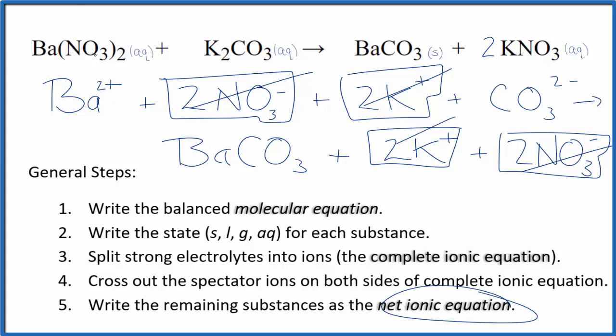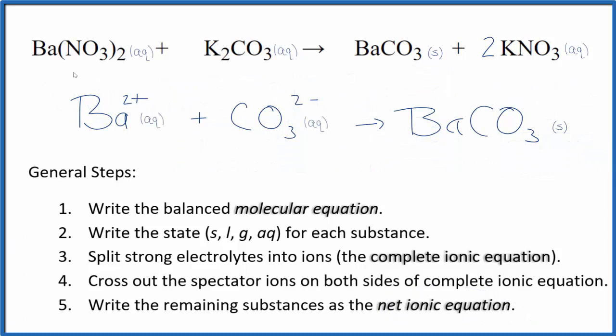What's left, that's the net ionic equation for Ba(NO3)2 plus K2CO3. Let me clean this up, write the states. We'll have our net ionic equation. So this is the balanced net ionic equation for barium nitrate plus potassium carbonate.